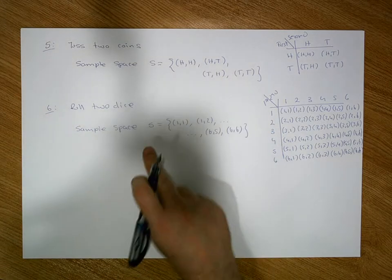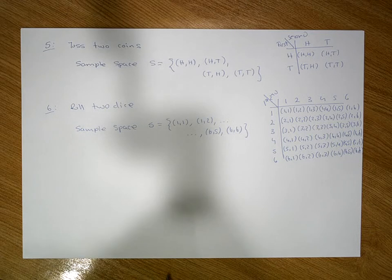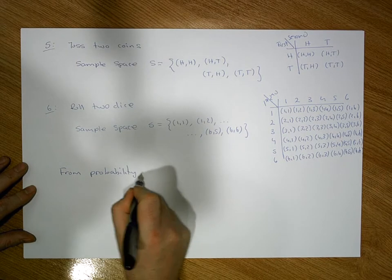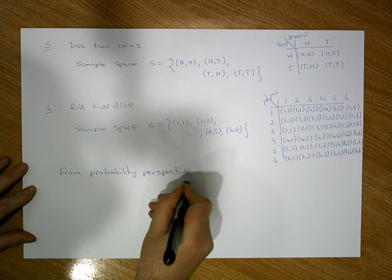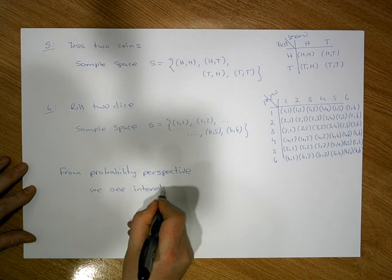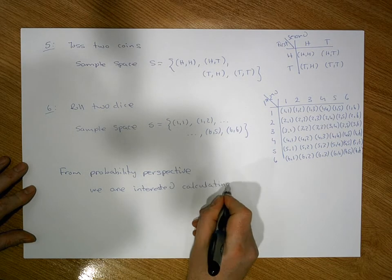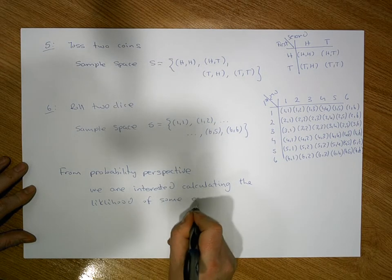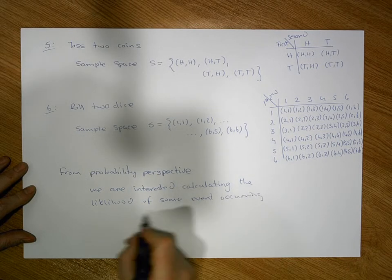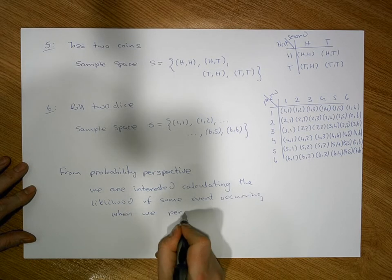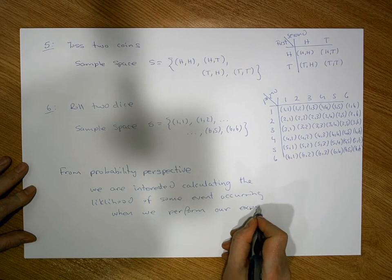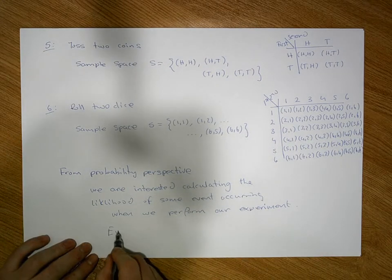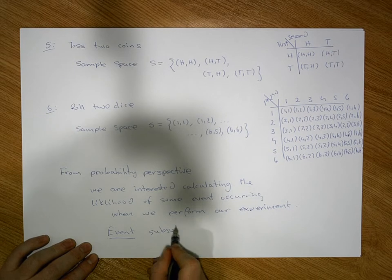From a probability perspective, what we're typically interested in is an event that occurs. From a probability perspective, we are interested in calculating the likelihood of some event occurring when we perform our experiment. We know that the sample space is a list of all possible outcomes, and an event is simply a subset of the sample space.